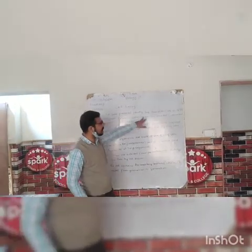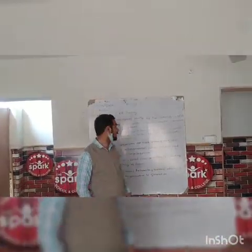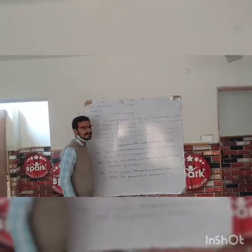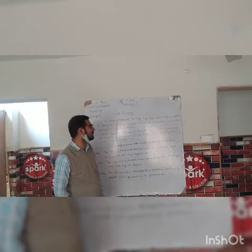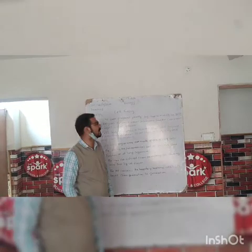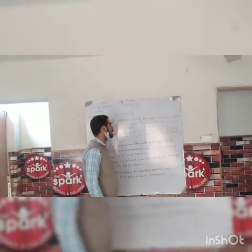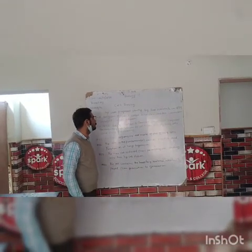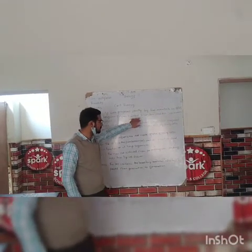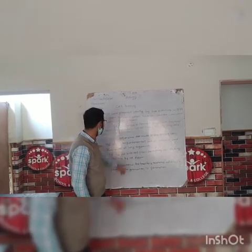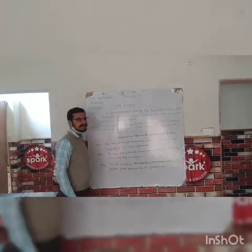Two scientists came in 1839. The first one is Belgian botanist Schleiden and the other one is German zoologist Schwann. These two scientists, in 1839, proposed the Cell Theory.